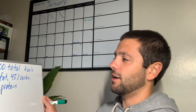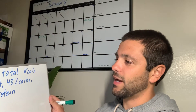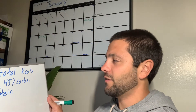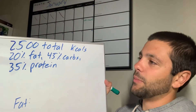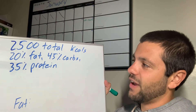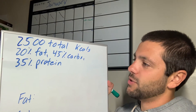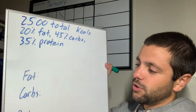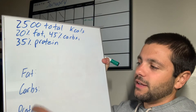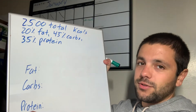So let's just say for a mock equation, we have a situation where an athlete is consuming 2,500 total kcals. 20% is going to be from fat, 45% of those calories are going to be from carbs, and 35% from protein. So we're going to need to find the kcals for fat, carbs, and protein.